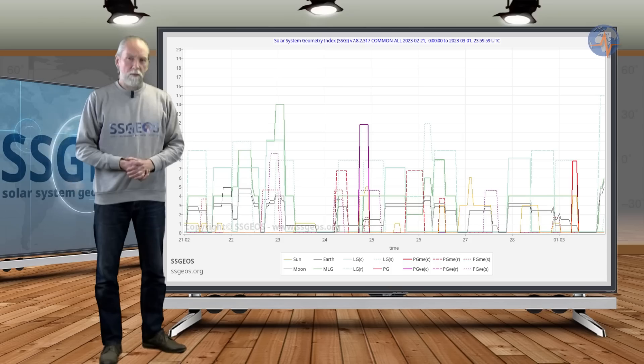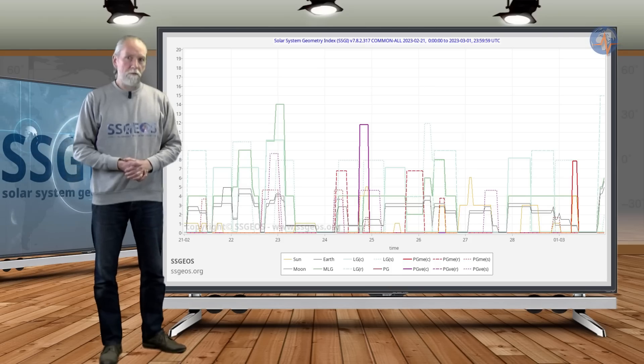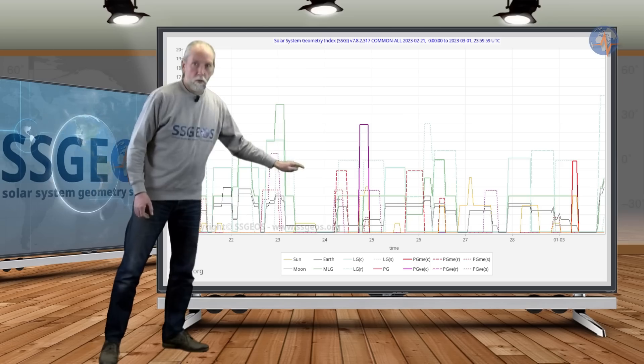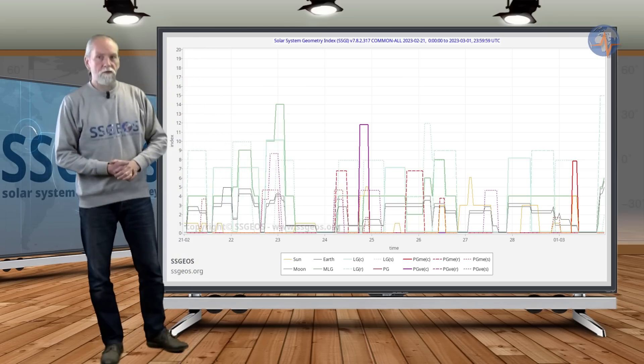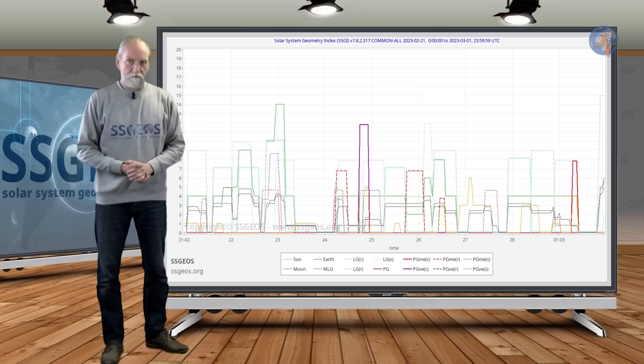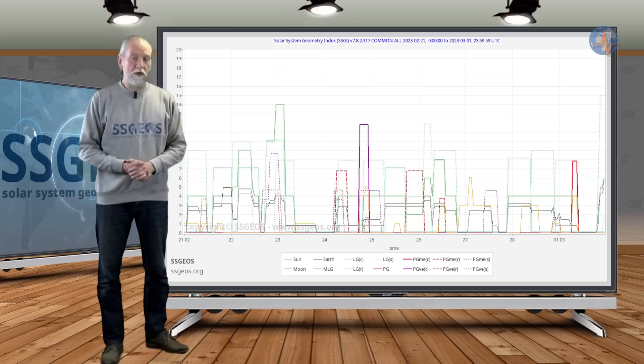Let's have a look at the planetary and lunar geometry in the last week of February. On the SSGI graph we see a purple peak. This is one planetary conjunction on the 24th and it is followed by a lunar conjunction early on the 25th. Overall the last week of February doesn't look too critical.